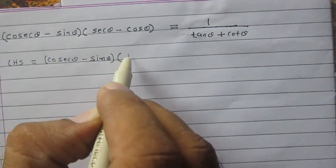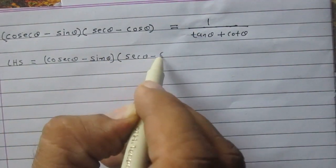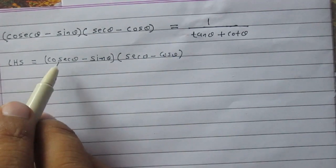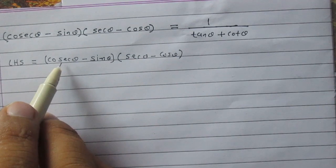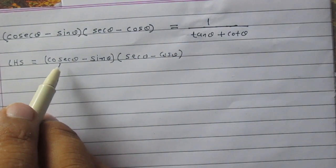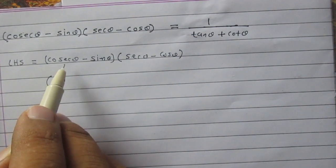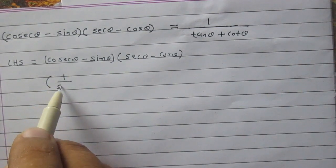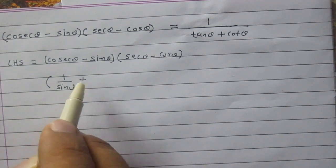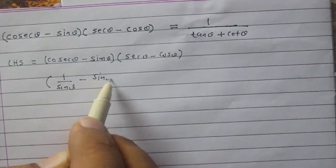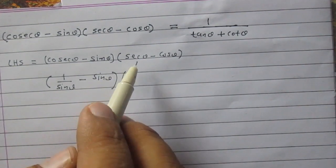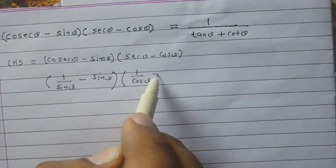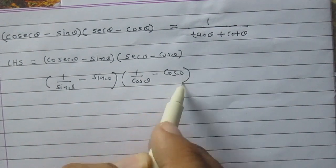We know that cosec θ is equal to 1 upon sin θ — cosec θ is the reciprocal of sin θ. So cosec θ can be written as 1 upon sin θ, then minus sin θ as it is. Similarly, sec θ can be written as 1 upon cos θ, minus cos θ.